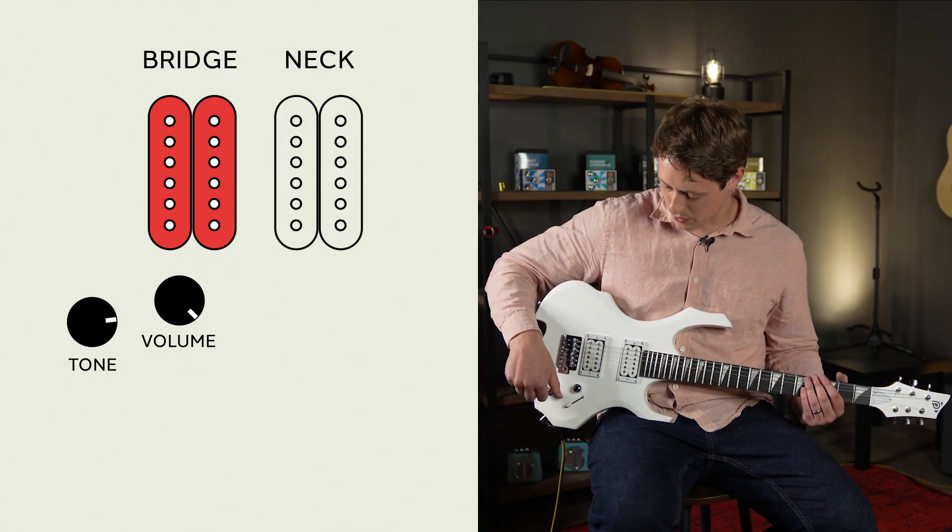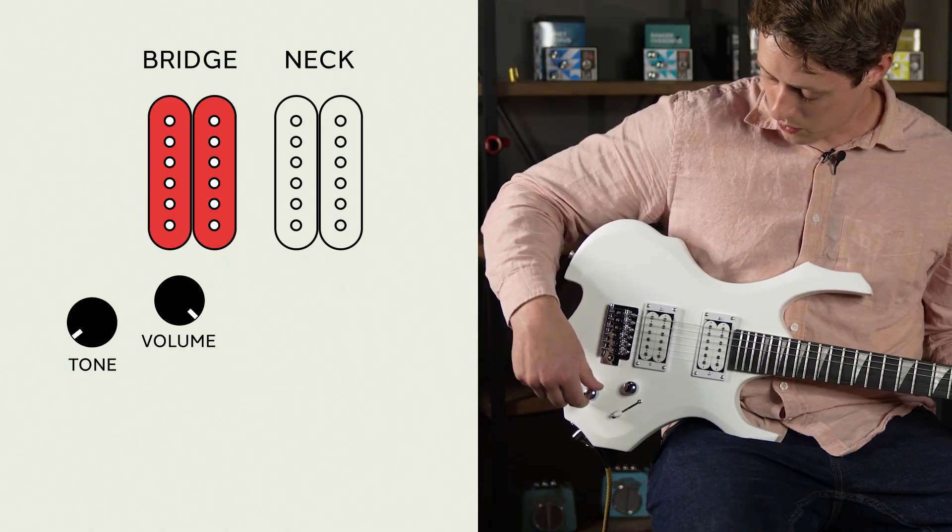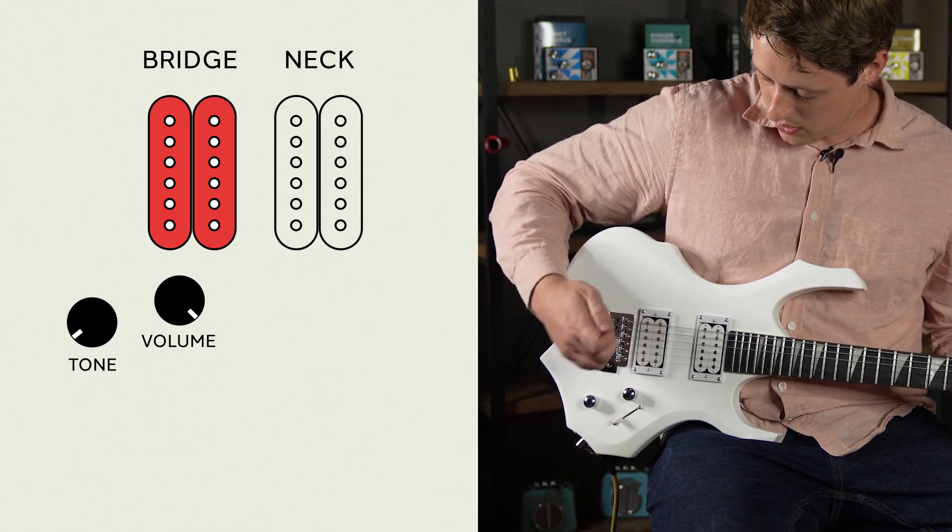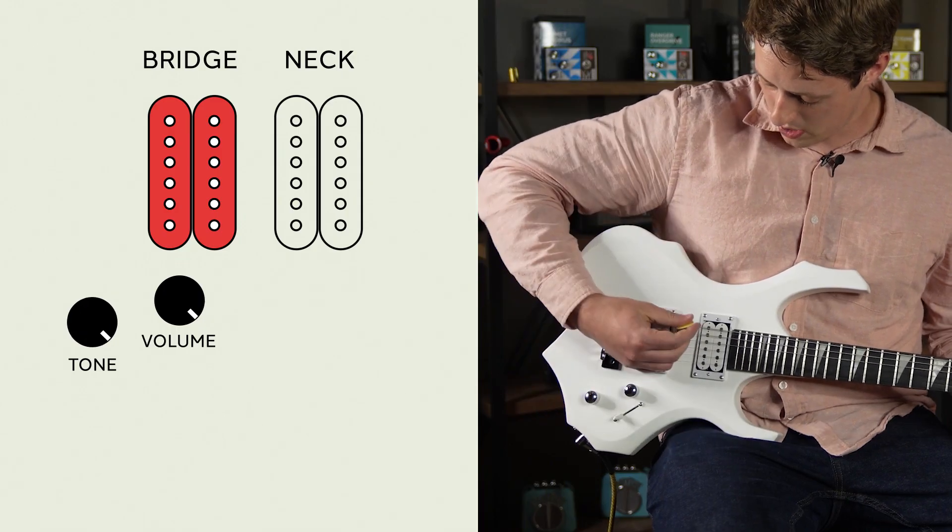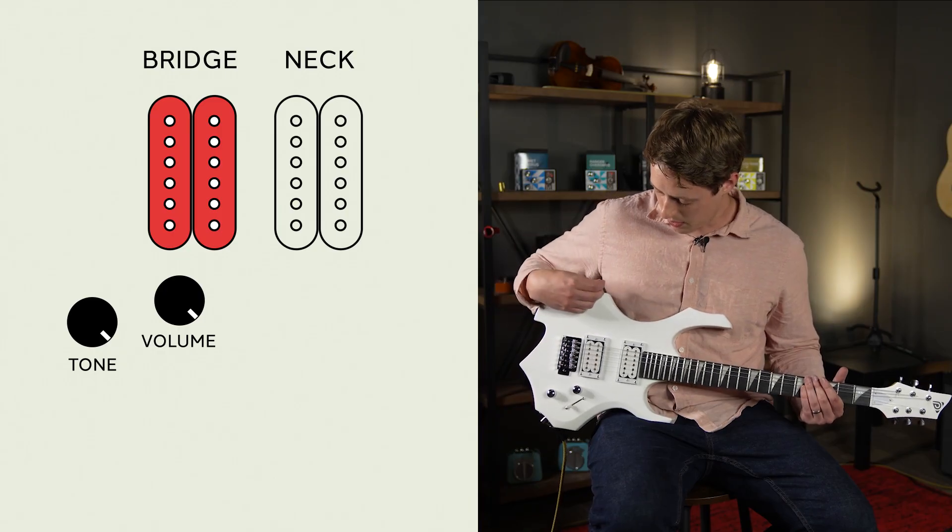The tone knob adjusts the frequency and acts as a bit of a frequency filter. When it's turned down all the way, it takes away a lot of high frequency from your sound. And when turned up all the way, it adds it right back in.